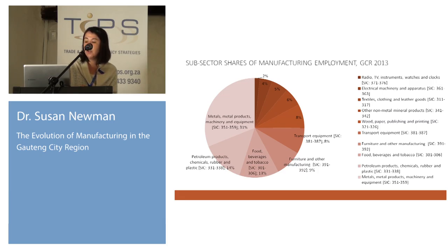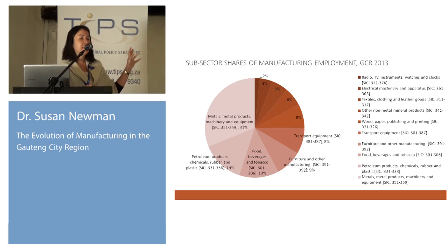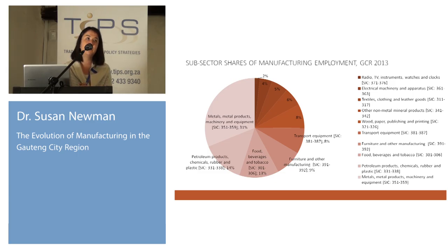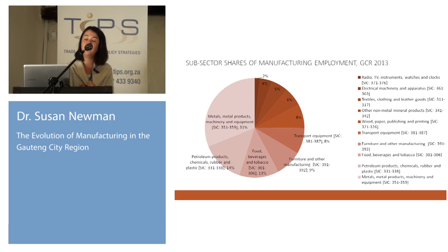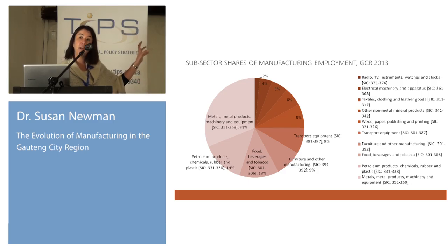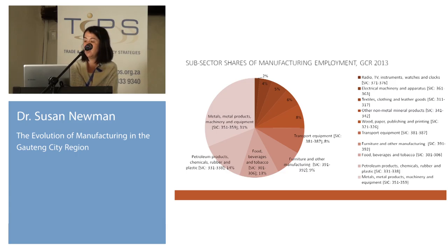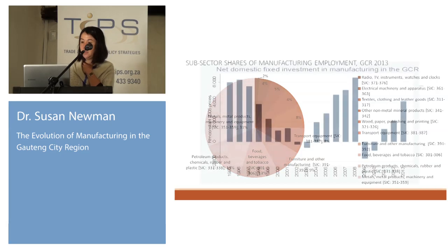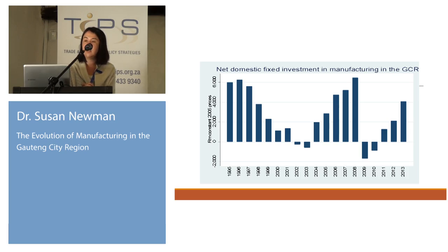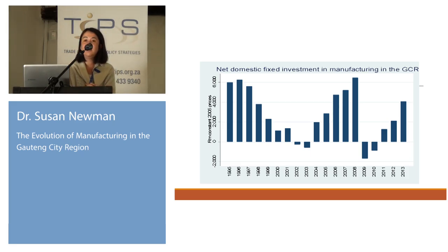We want to bring attention to this because we are interested in employment generation and how the industrial structure of the economy determines and conditions the nature of employment. If we look at employment, we see a slightly different picture. Those two large sectors again make up most of employment in manufacturing, but metals overtakes petroleum products because of the difference in capital intensity. Other important employment generators include food, beverages and tobacco, furniture and other manufacturing, and transport equipment — which were all in the top right quadrant of that scatter plot, identified as sectors with very strong backward linkages and strong employment multipliers.